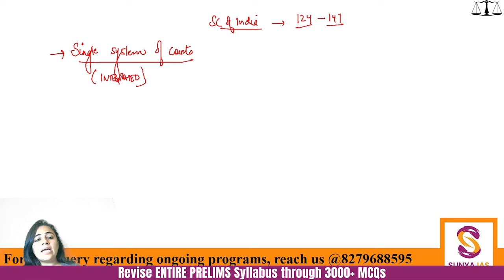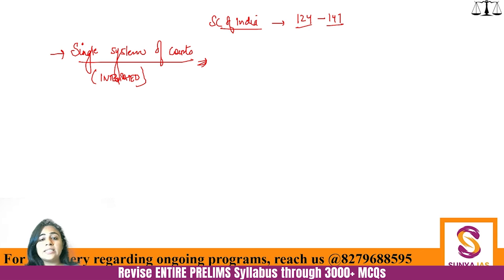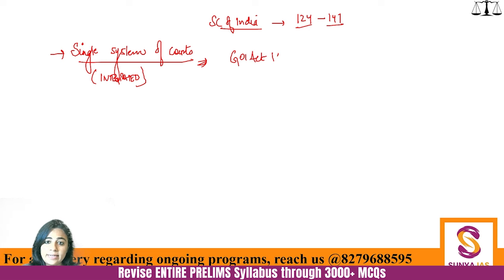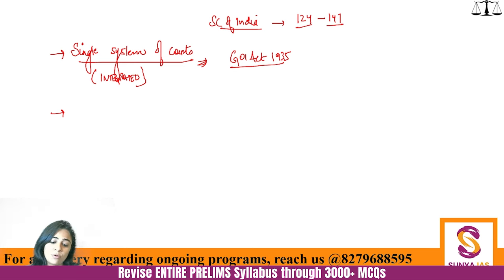The system of a single court — a single integrated system of courts — means there are no separate courts for states and the union. There are high courts and subordinate courts, and at the union level there is the Supreme Court, the 'Maybap' of all courts in India. This is called the single system or integrated system of courts. This is a unitary feature, and it has been borrowed from the Government of India Act 1935 — not from Canada.